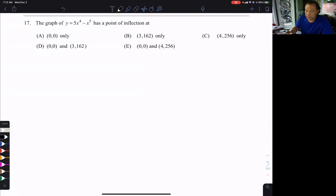They're looking for inflection points, and that's where the second derivative changes signs. But where do we look for where the second derivative changes signs? That's going to be where the second derivative is zero or does not exist.